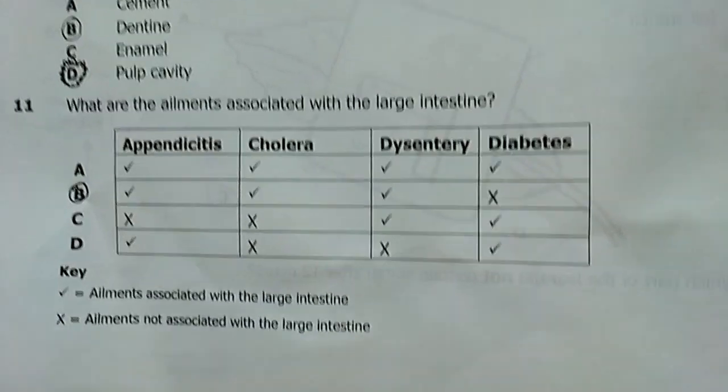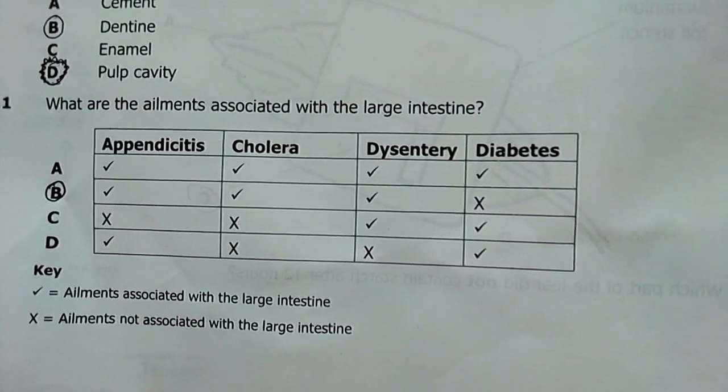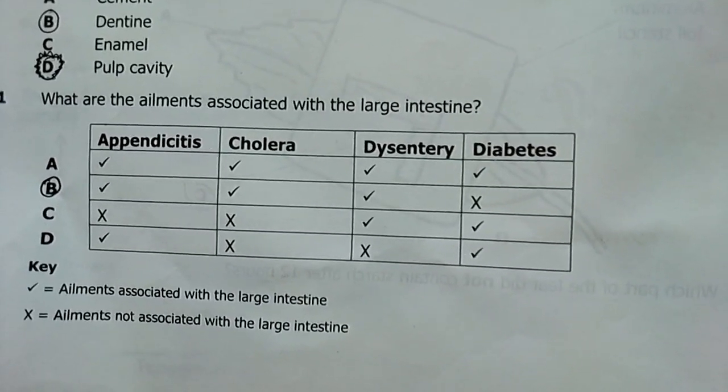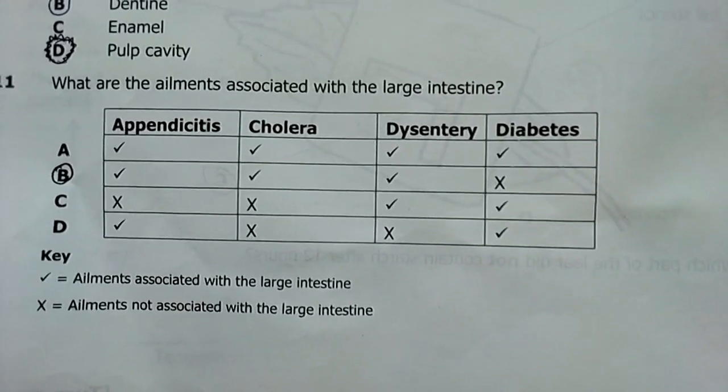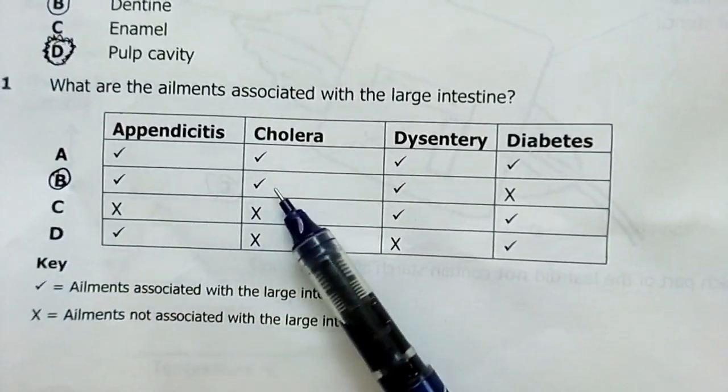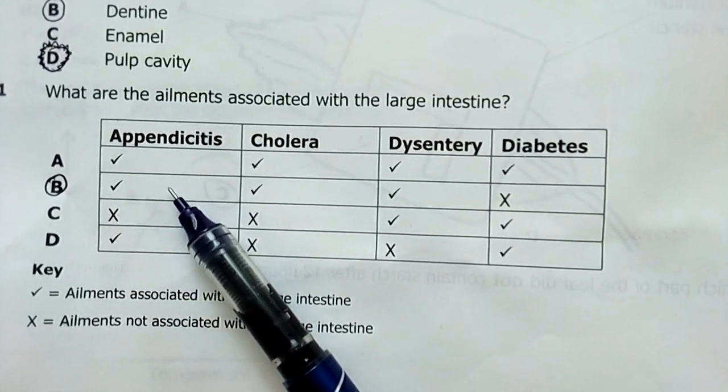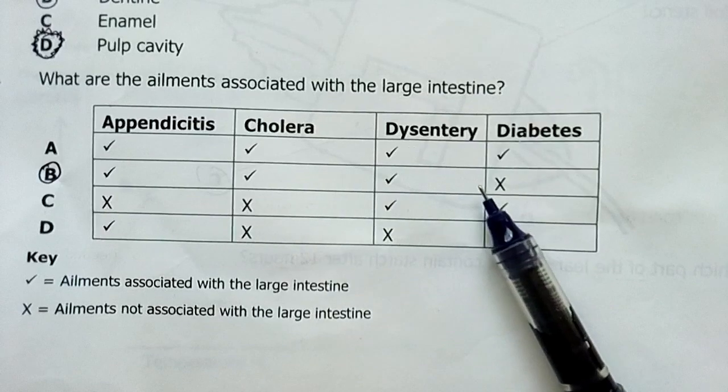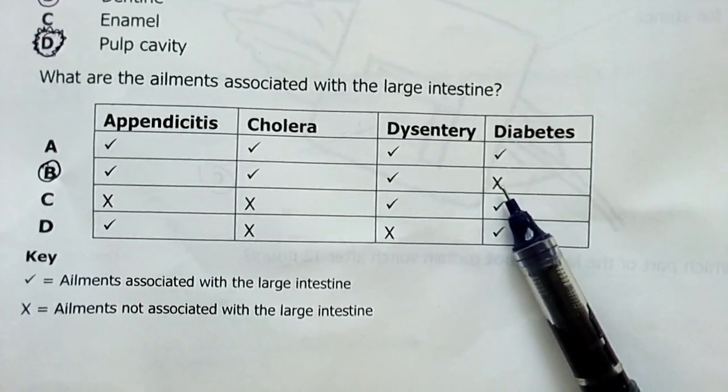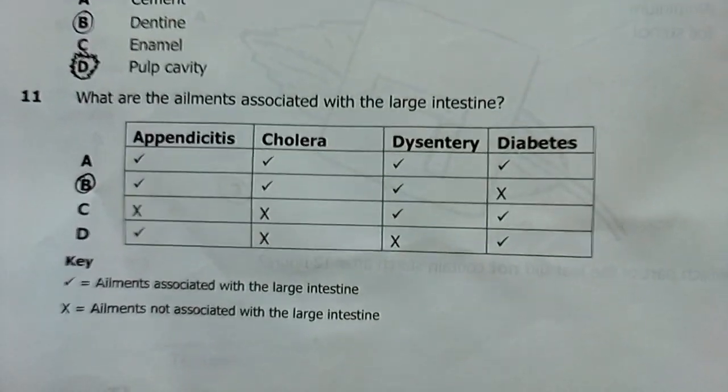Number 11, what are the ailments associated with the large intestine? Remember, the large intestine is a site where absorption of water takes place. My answer was B. Appendicitis. The appendix is found just at the beginning of the large intestine. Cholera, yes. Dysentery, yes. Diabetes, no. This is sugar disease. It doesn't affect the alimentary canal. So, B is our answer.